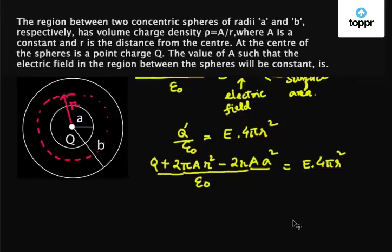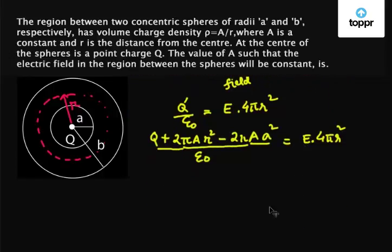Dividing both sides of the equation by 4 pi r squared, we just have flipped this equation and written E on the left side. So we get E equals to Q minus 2 pi A into a squared upon 4 pi r squared into epsilon naught plus A over 2 epsilon naught.